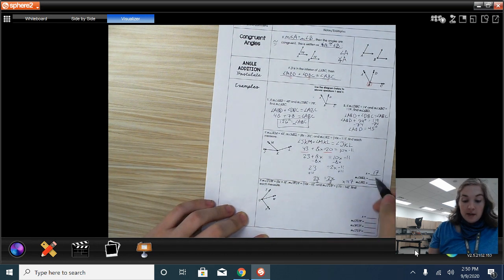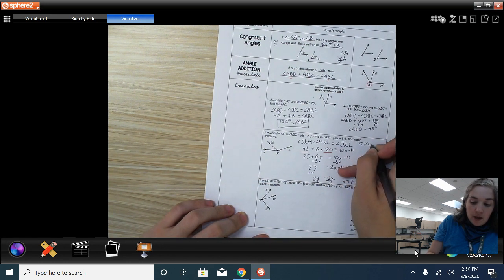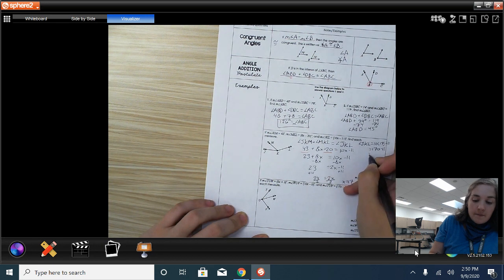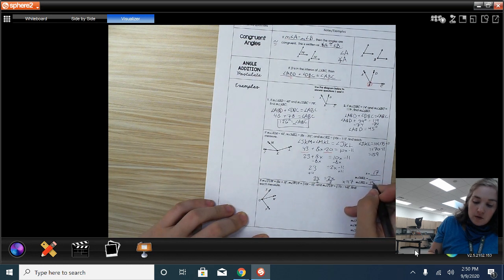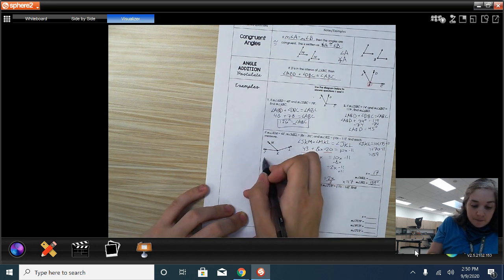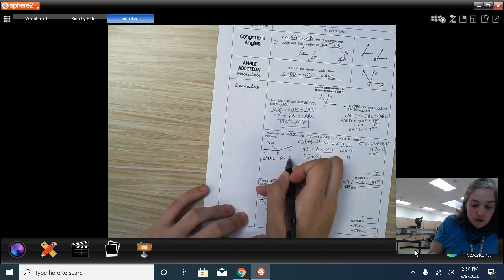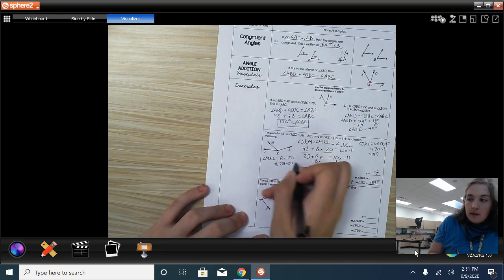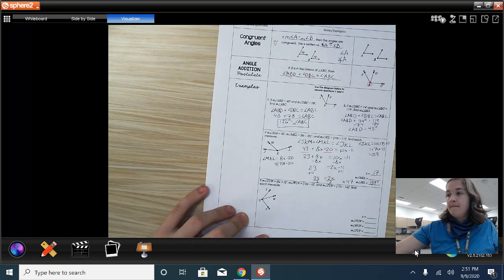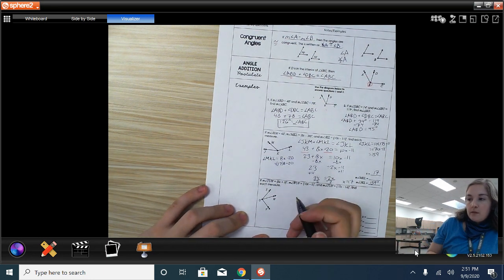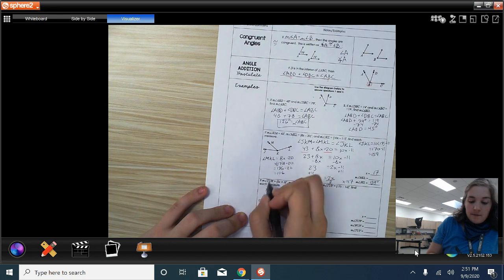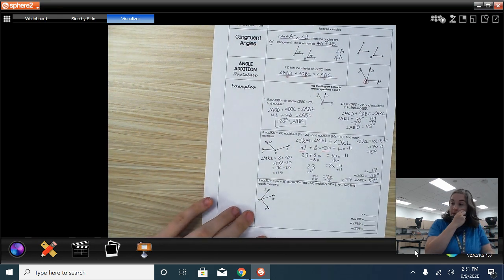Now that I know that my x is 17, for angle JKL, I can plug in 17 for x. So, we have 10 times 17 minus 11. Well, that's 170 minus 11. So, that would be 159 for angle JKL. 159 degrees. And then, for angle MKL, we have 8x minus 20. We're going to plug in 17 times 8 and subtract 20 from that. So, we end up with 136 minus 20. So, we get 116.